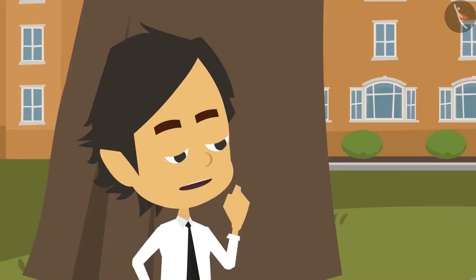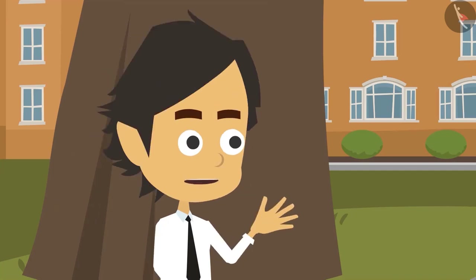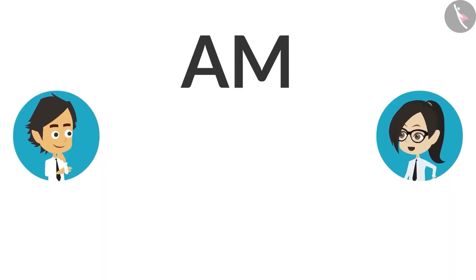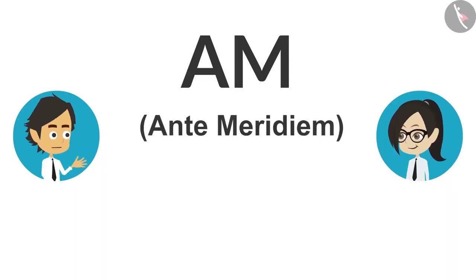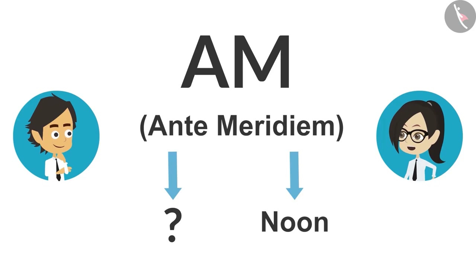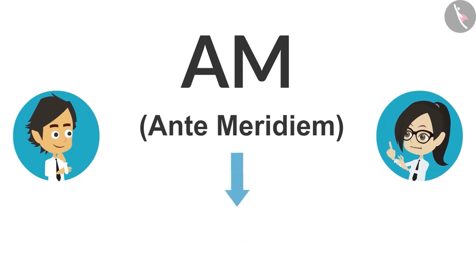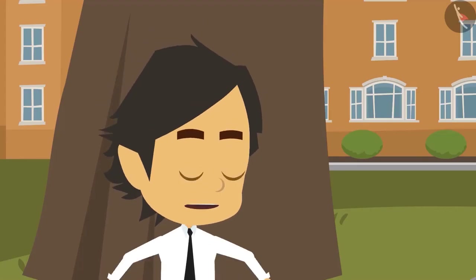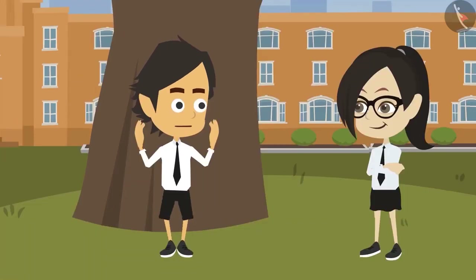I have memorized for PM — Post Meridiem. Now tell me for AM. The full form of AM is Ante Meridiem. I know Meridiem means noon, but what does Ante mean? Ante is a Latin word which means before. So AM means before noon. Now I understand and I'll never forget!